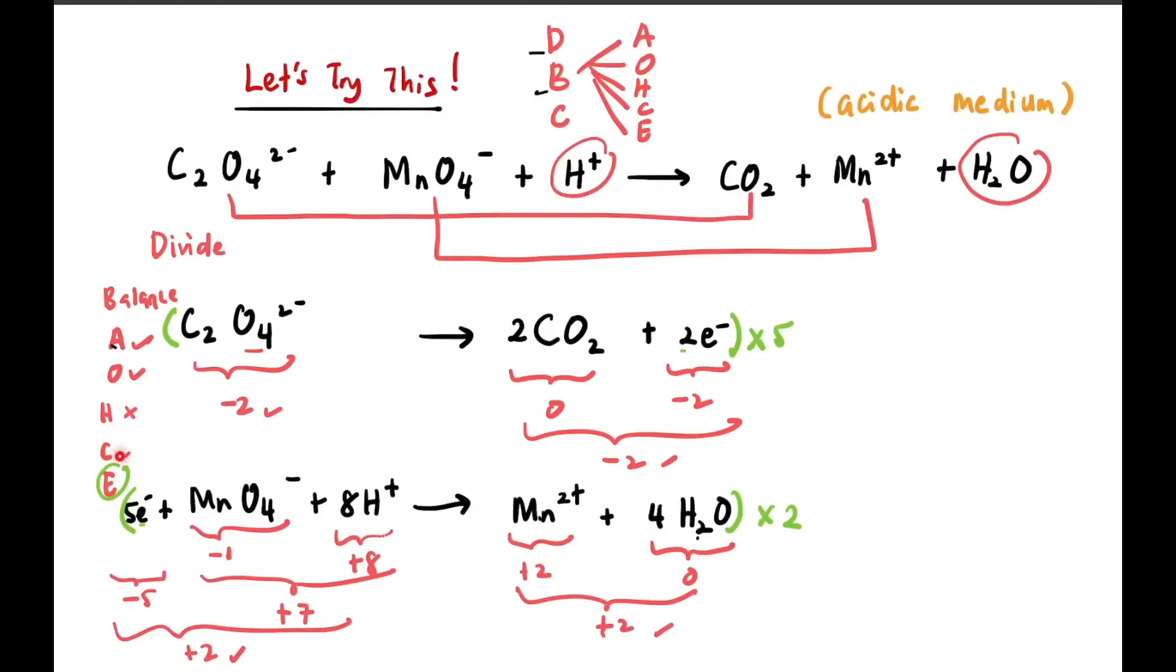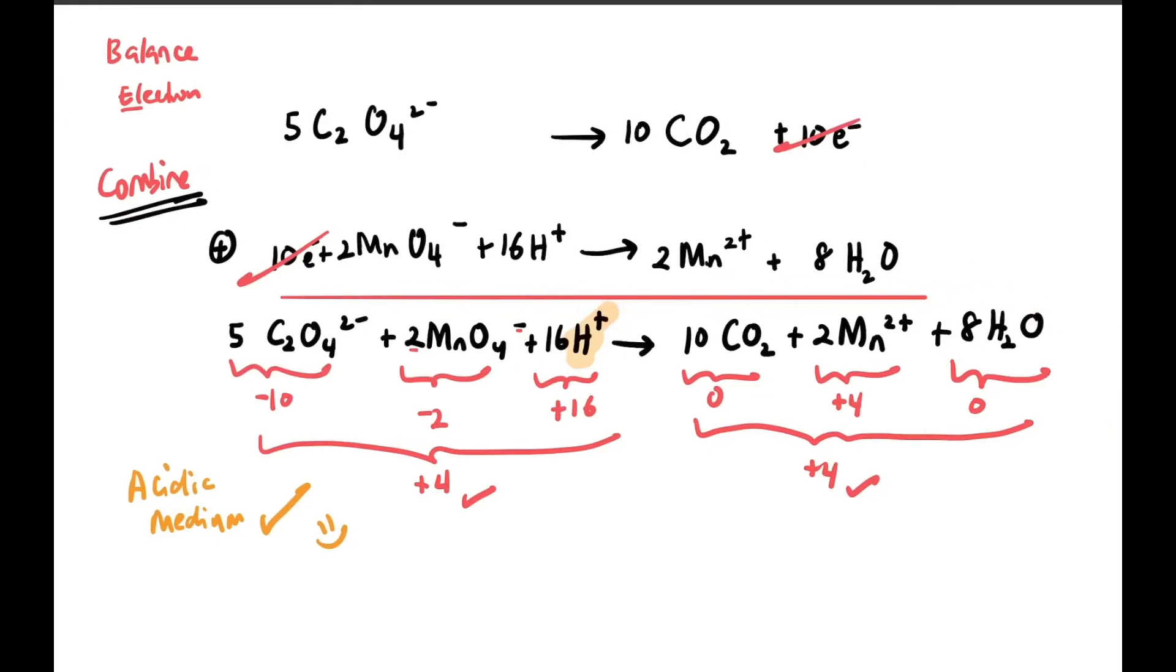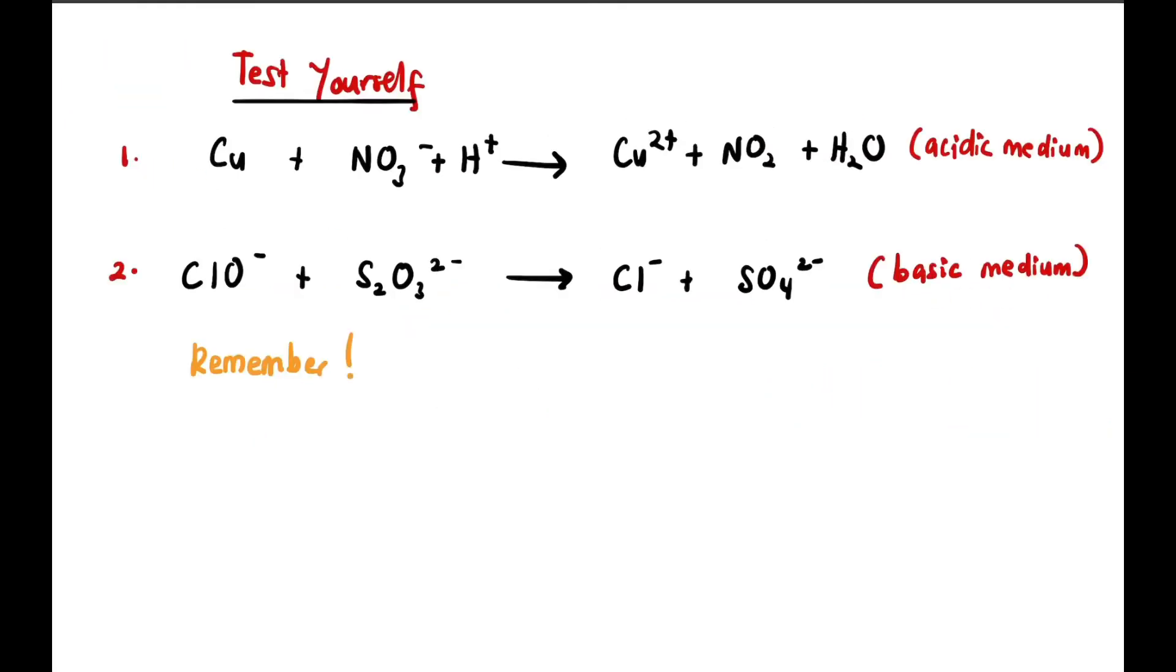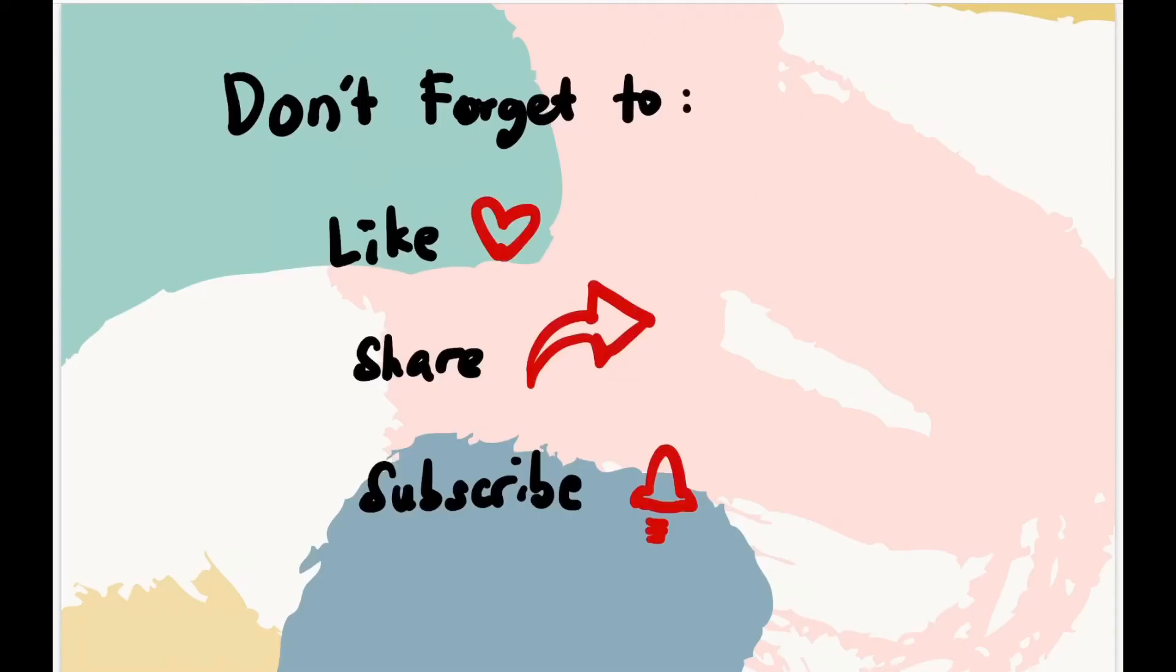So after DBC-OAHE, H⁺ and H₂O appear by themselves at the end of the equation. Now test yourself with these two equations and balance them according to the medium given. Just remember DBC-OAHE: divide, balance, combine - atoms, oxygen, hydrogen, charge, and electron. In acidic medium, if you want to do it in basic medium, just follow back all the steps and then just add one step plus, which is adding OH⁻ on the equation. So don't forget to like, share, and subscribe if you like the video. Thank you. Bye bye.